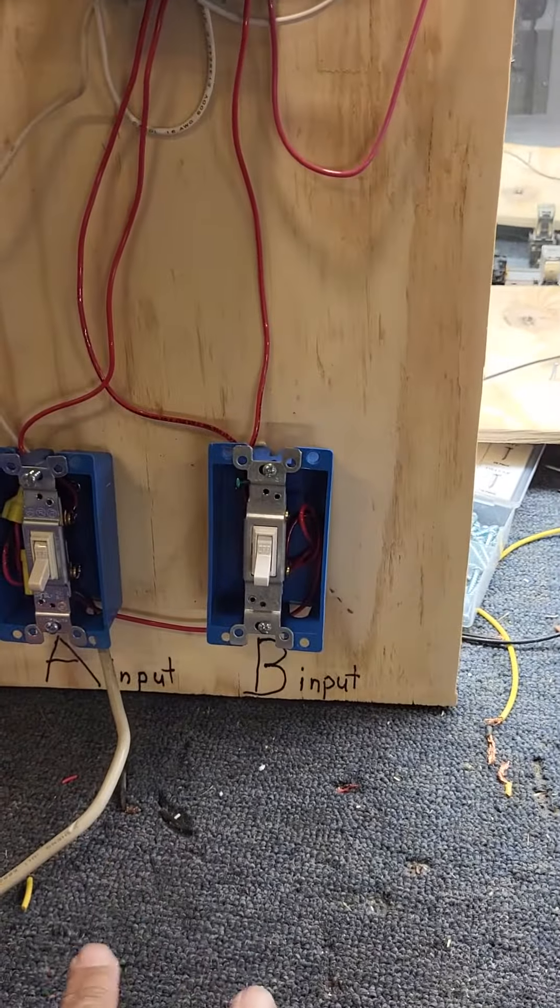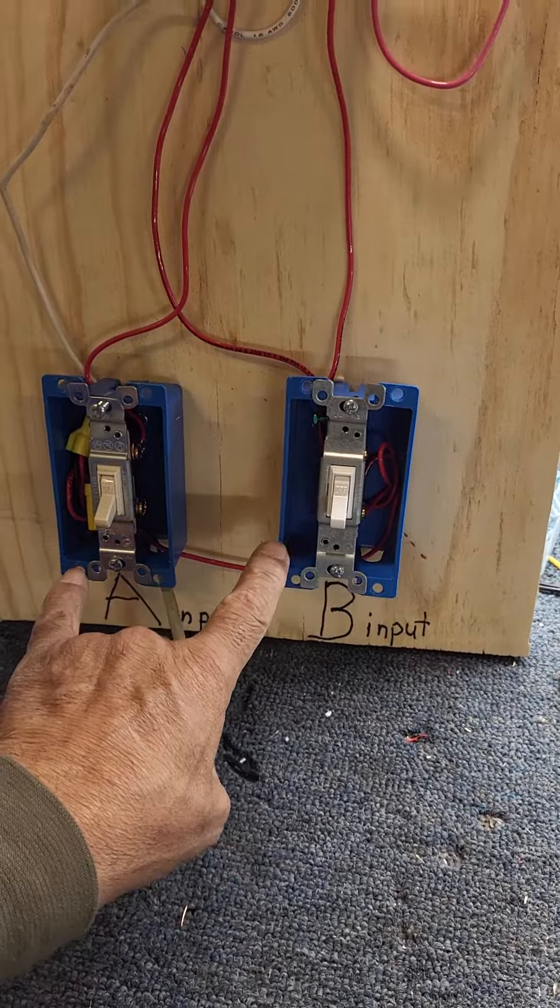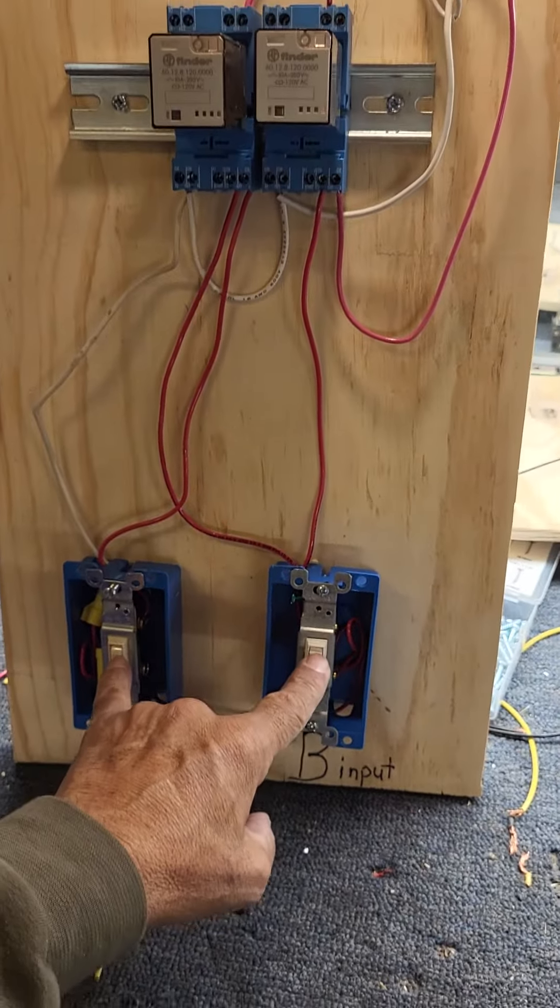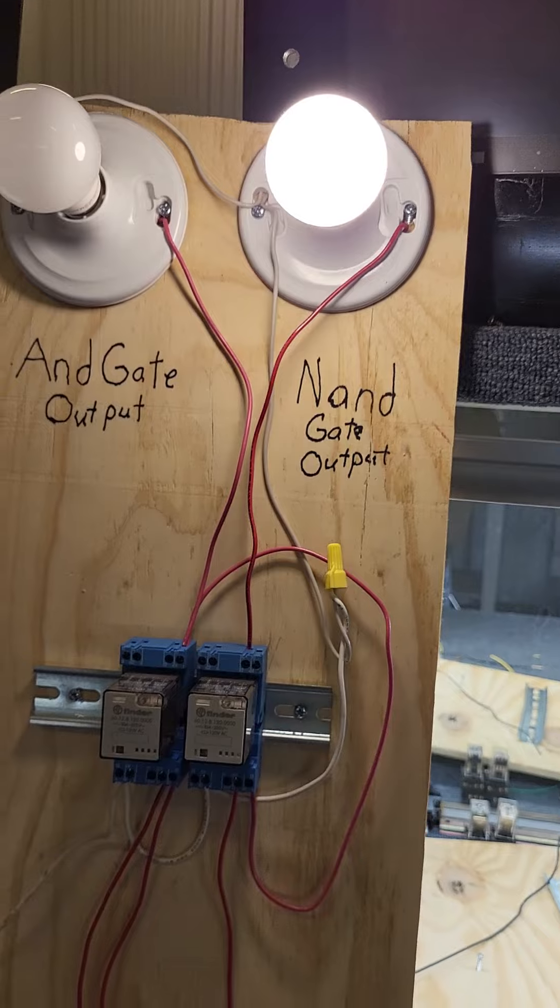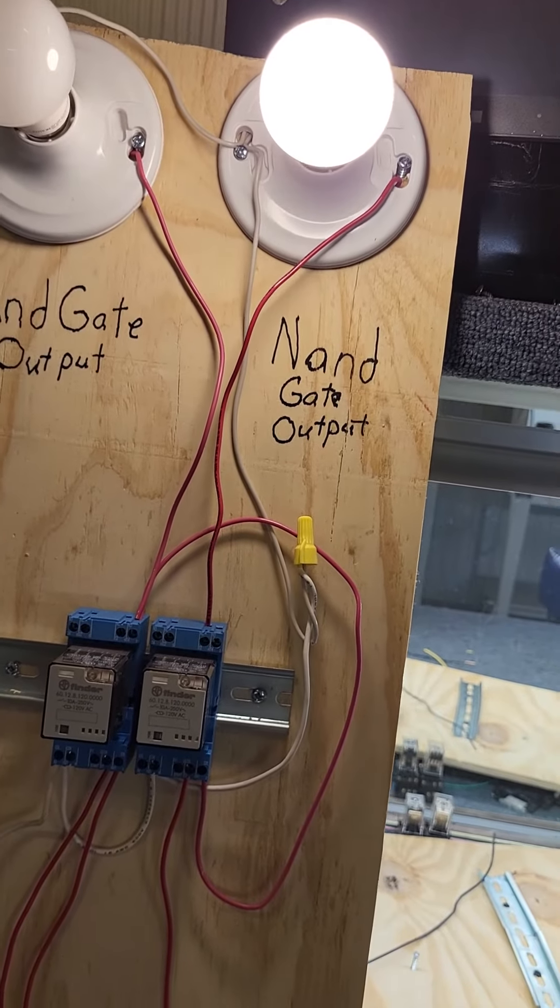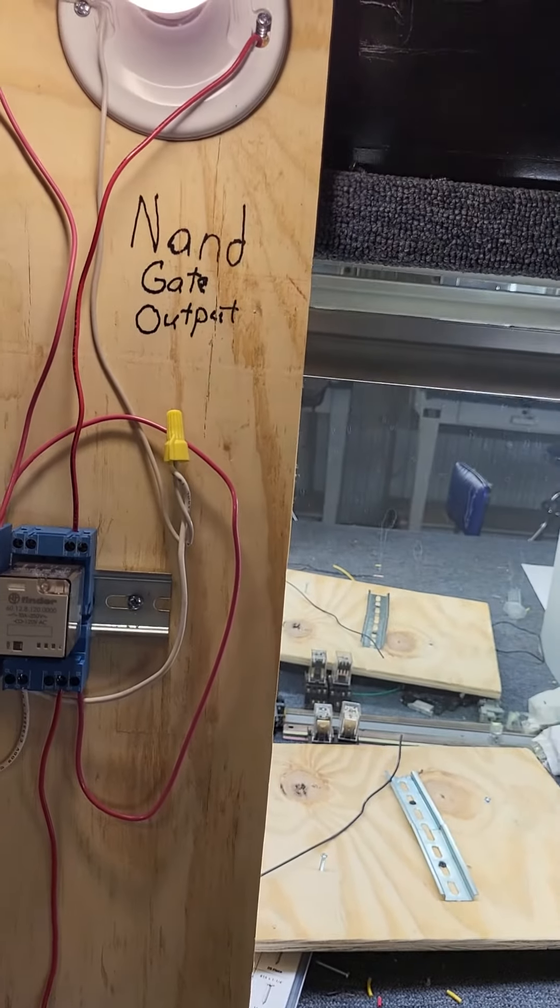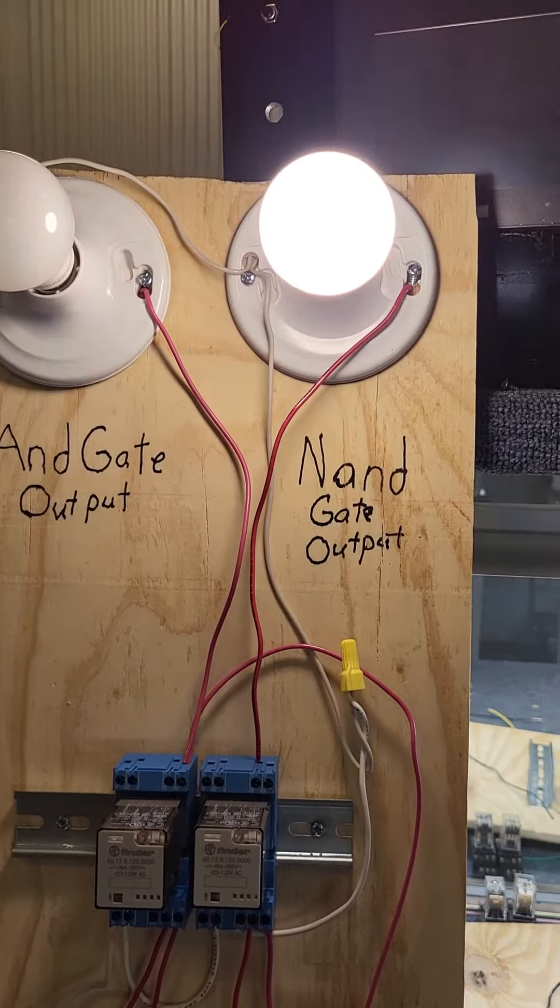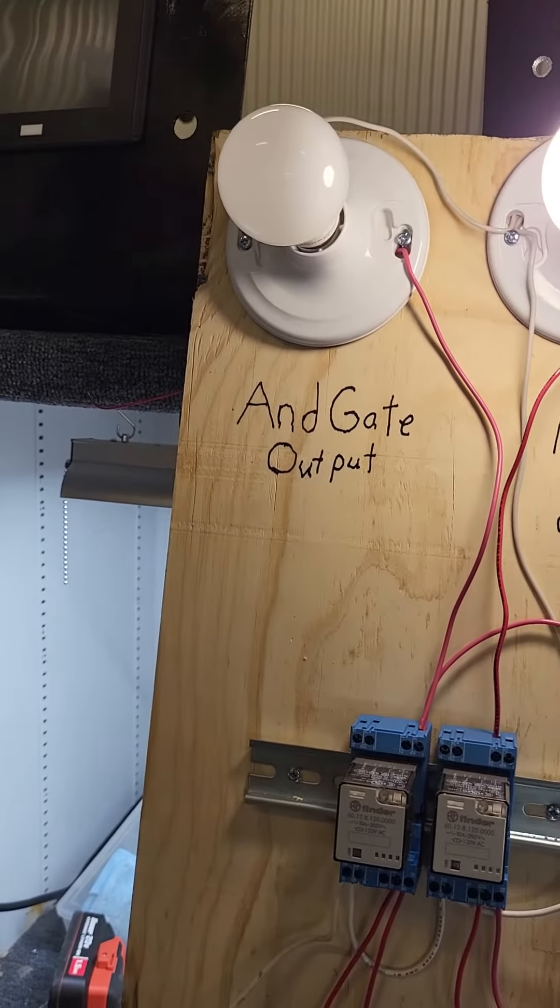Right now both of them are off because our truth table is zero zero, so NAND is on. But now if we put zero one, our AND is off and NAND is on.